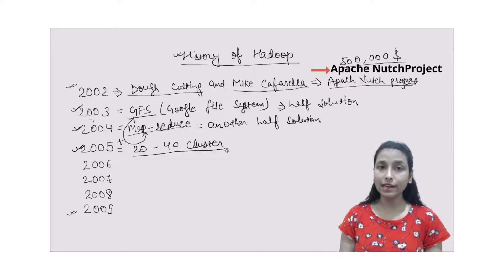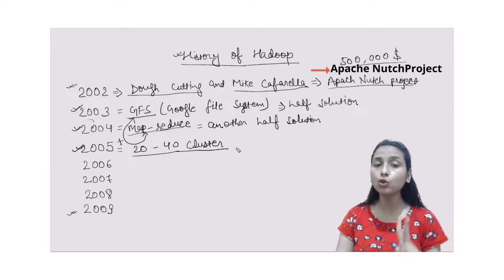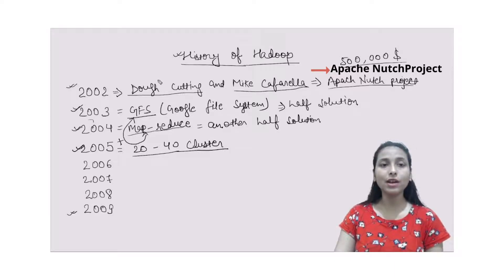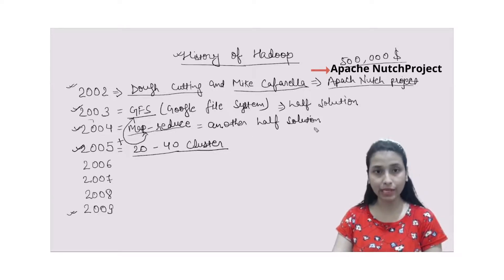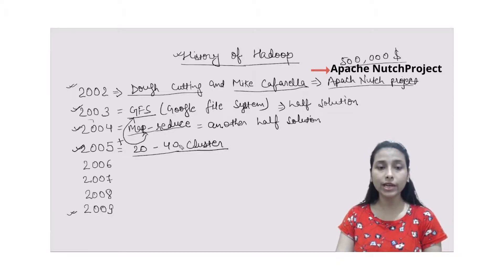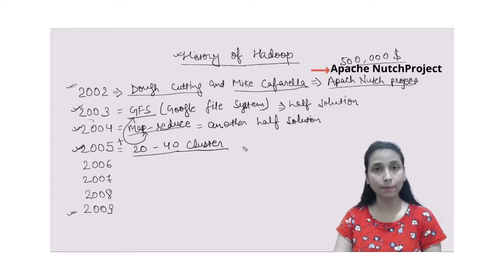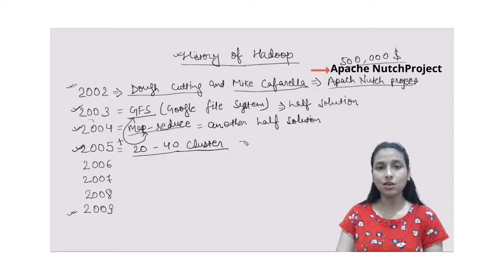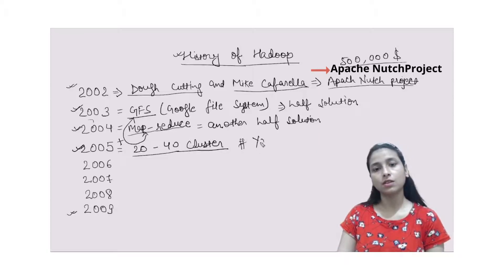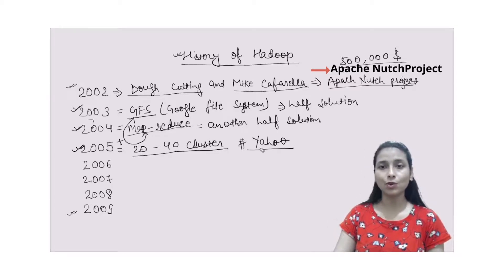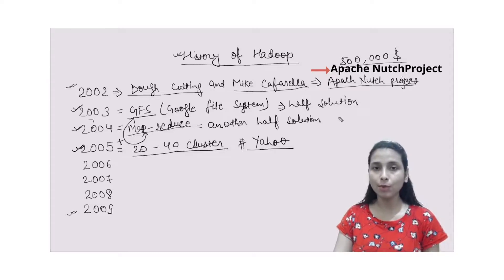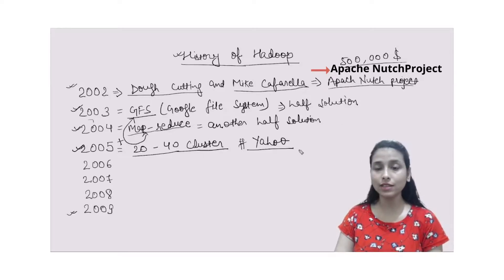To overcome this limitation, more manpower was needed because in the Apache Nutch Project only two people were working — Doug Cutting and Mike Cafarella. To scale beyond 20 to 40 clusters they needed more manpower. At that time, one company called Yahoo was quite interested to work on their project, so Yahoo joined the Apache Nutch Project with their employees and started working on it.